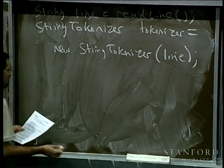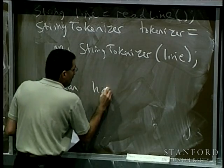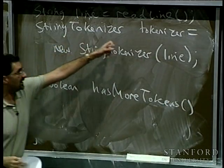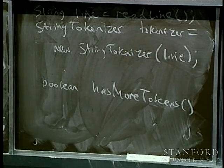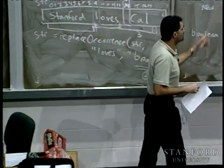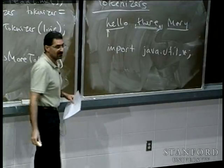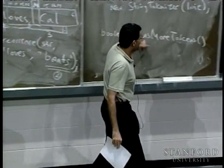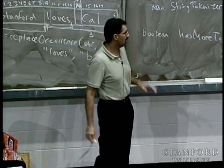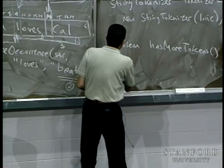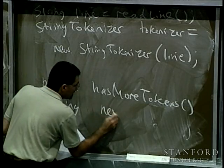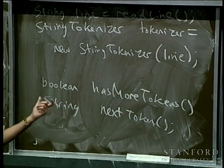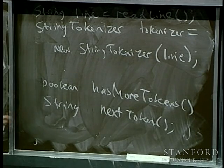There are a couple things you can ask the StringTokenizer. One is a method that returns a boolean called hasMoreTokens. You ask tokenizer.hasMoreTokens() — do you have more tokens, have you processed the whole string yet? If you've just created it with a line, it returns true. When the string is fully processed, it returns false. To get each token, you ask for nextToken.